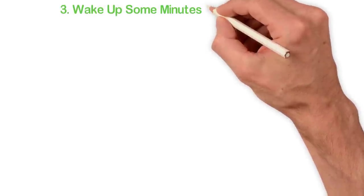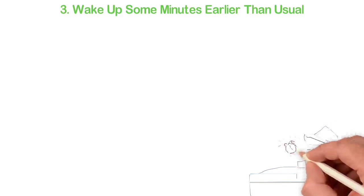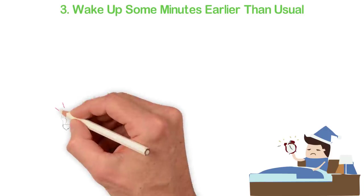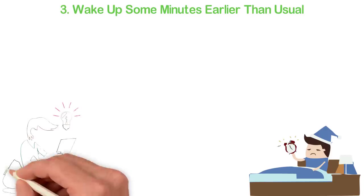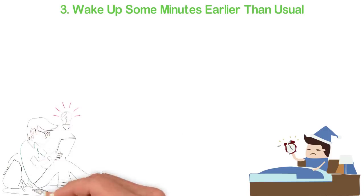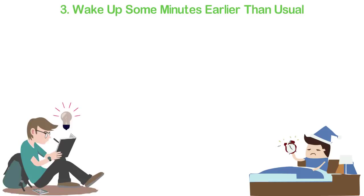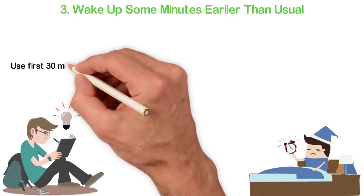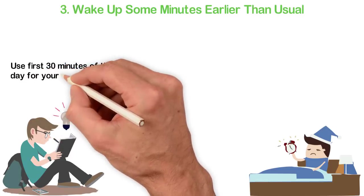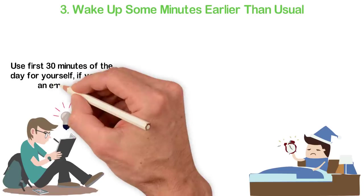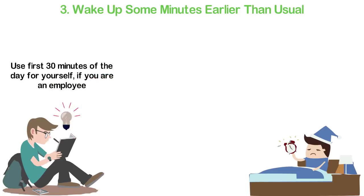3. Wake up some minutes earlier than usual. If you are an employee who has to resume at a particular work in the morning, you can wake up some minutes earlier than usual, let's say 30 minutes. If I were you, I will use these 30 minutes strictly for myself. I may read some good books, meditate or pray. I may use this time to pay attention to my mind and understand the world around me better. When you get used to 30 minutes, you can now try an hour.